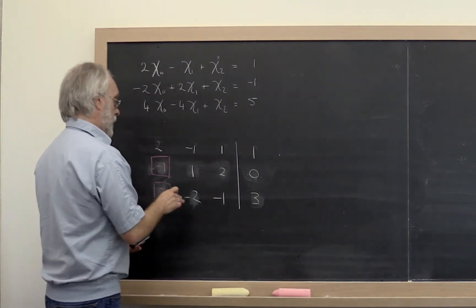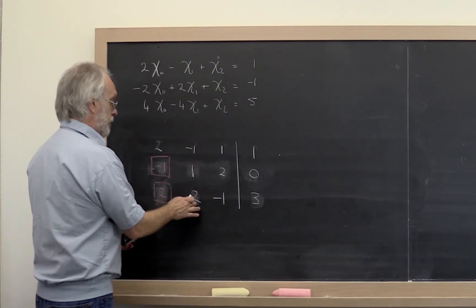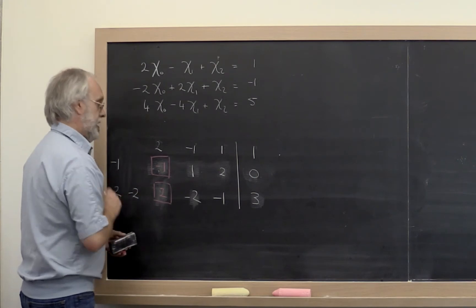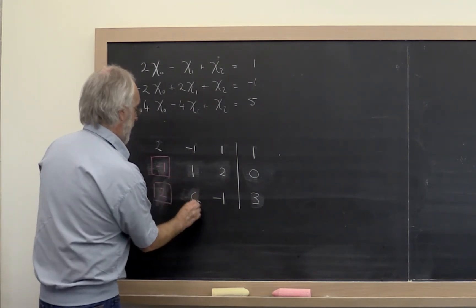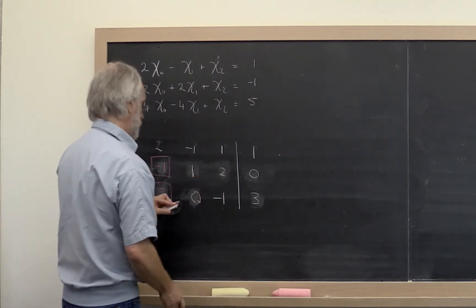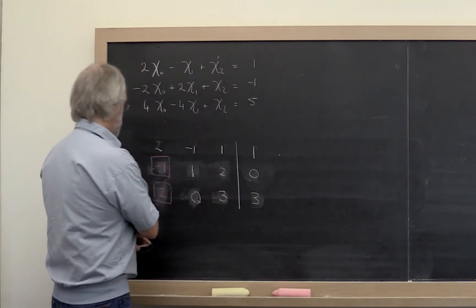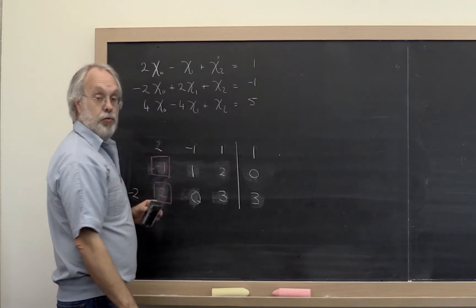If I do minus 2 times 1 and subtract it from 2, I get 0, so your multiplier becomes minus 2. Then minus 2 times 2 subtracted off of 1 leaves you with a 3. And if you do minus 2 times 0 subtracted off of 3, you're left with a 3.